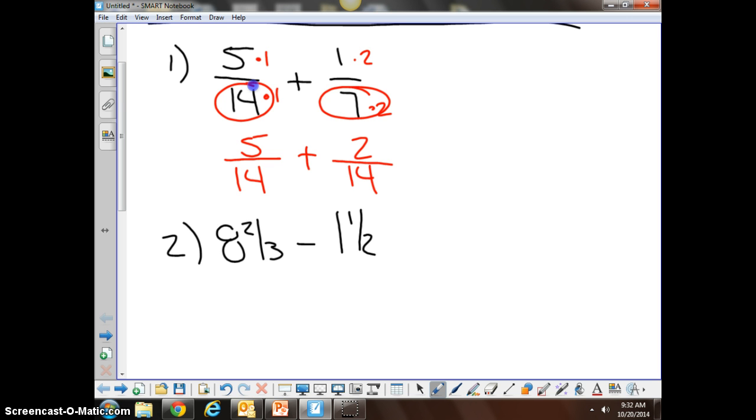5/14ths plus 2/14ths, now that we have the common denominator, can just simply be added together. We add the numerator 5 with the numerator 2, we get 7, the denominator stays the same, 14.